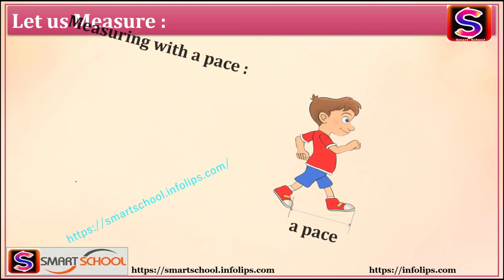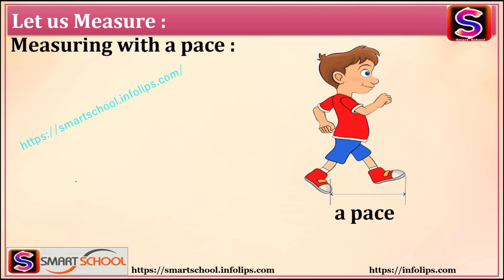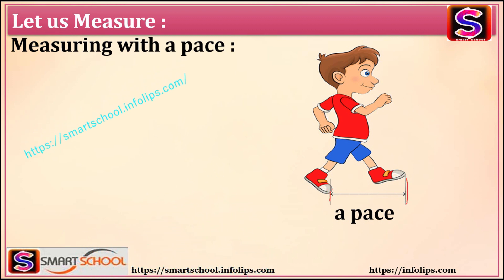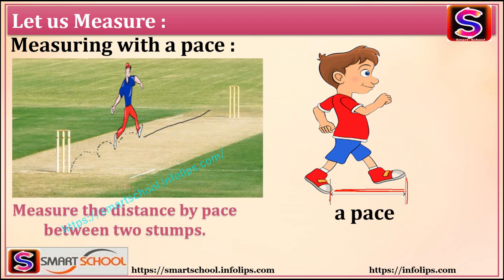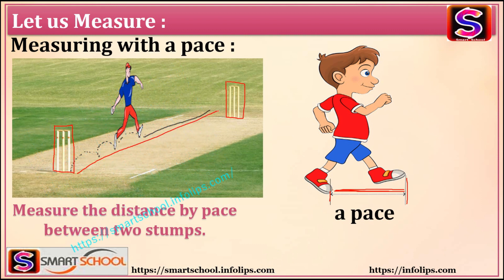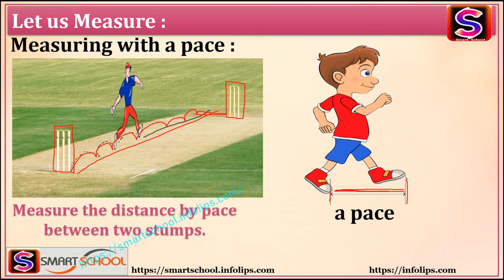Another method is measuring with a pace. A pace means the distance between our two legs while we walk. So the distance between two legs while walking is called a pace. For example, a player measures the distance between two stumps by pacing — one pace, two pace, three pace — continuing until he reaches the other stump.